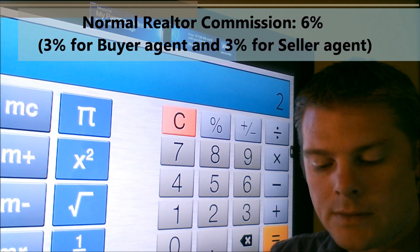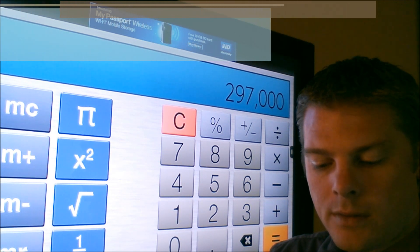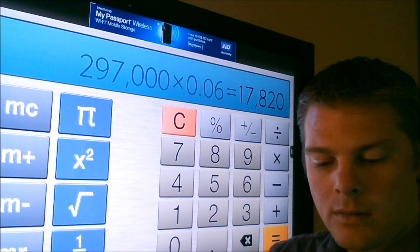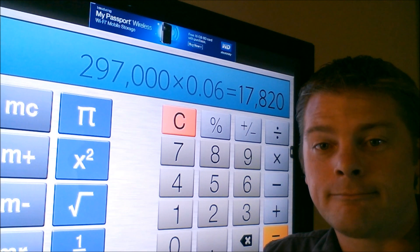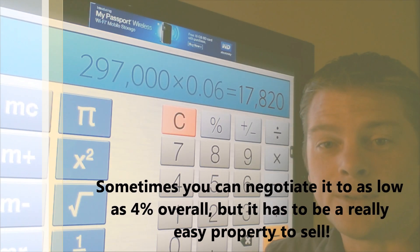So at $297,000 of what it's worth, you're going to be using $17,000 of that to pay commissions. That's a good check for that realtor.